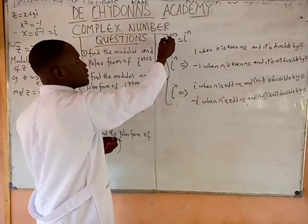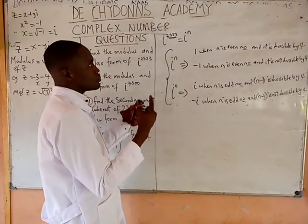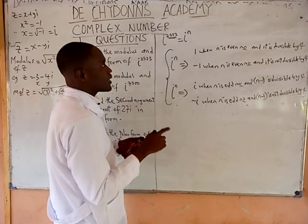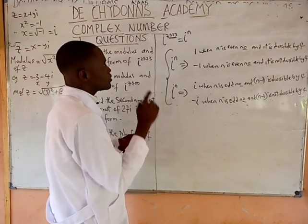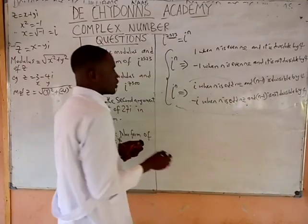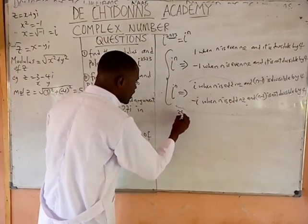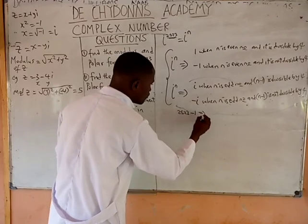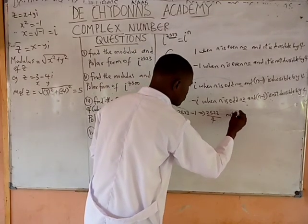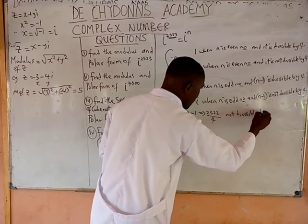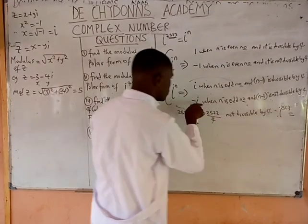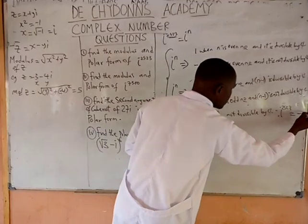So we ask ourselves: is 2523 an even number or an odd number? Check the last digit — it is 3, so 2523 is an odd number. It falls in the odd categories. Then ask: is 2523 minus 1, which is 2522, divisible by 4? Not divisible by 4. Therefore, i raised to the power of 2523 gives you minus i.